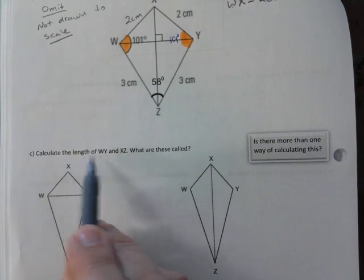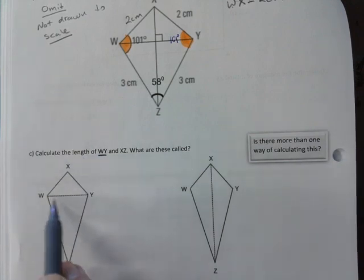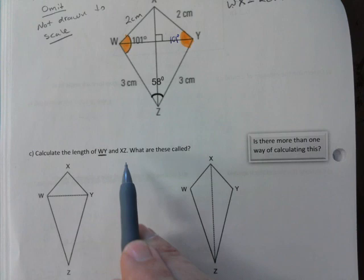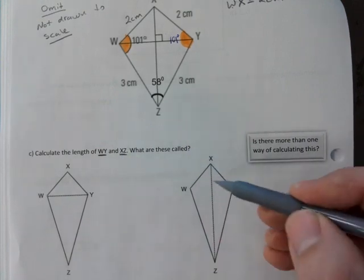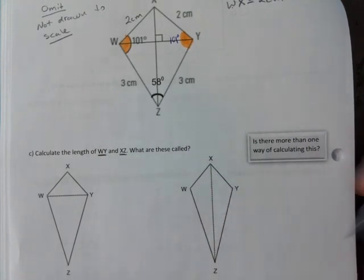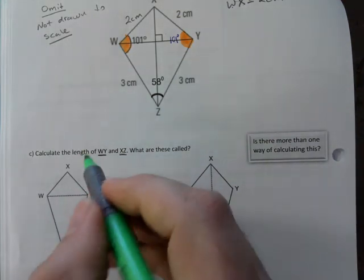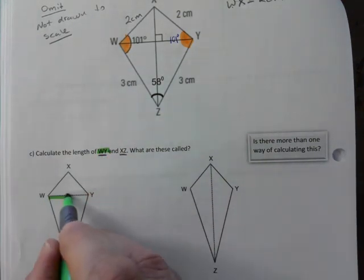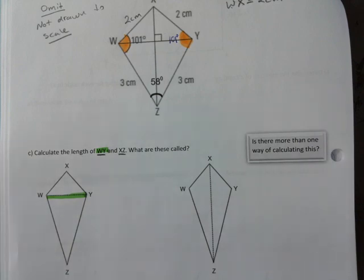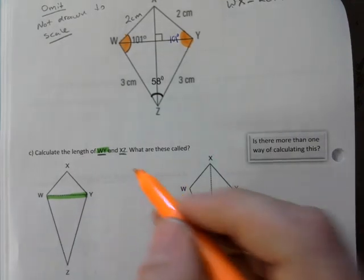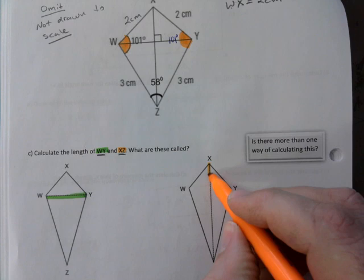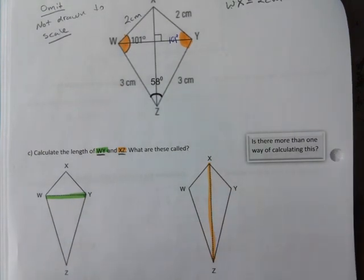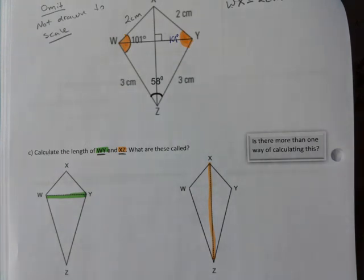Now, calculate the length of WY, so that's the short diagonal, and XZ, which is the long diagonal. I'm going to use two different colors here. I like it. It's standing out a bit more. So I'm going to find that one. And I'm going to find XZ, which is this stretch here.